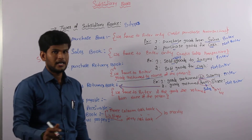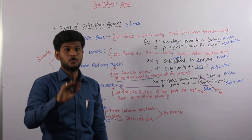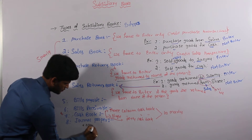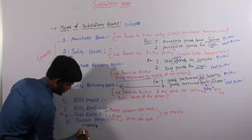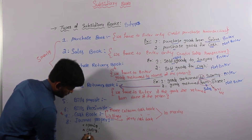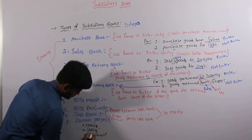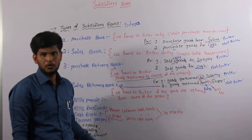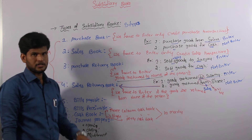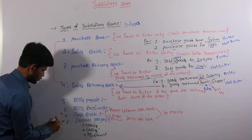Now come to the next one: journal proper. Journal proper is classified into opening entries, closing entries, and adjustments. Pronounce it as 'journal proper.' In this journal proper we have to enter opening entries, closing entries, and adjustments. This journal proper is a 2-mark problem.